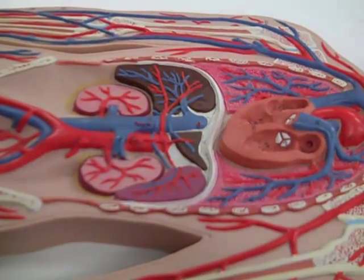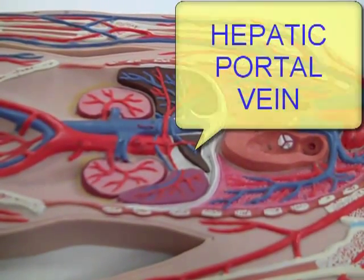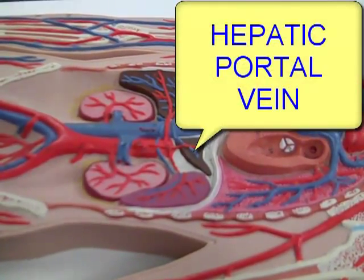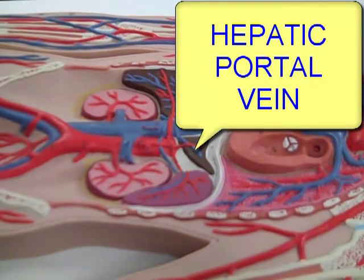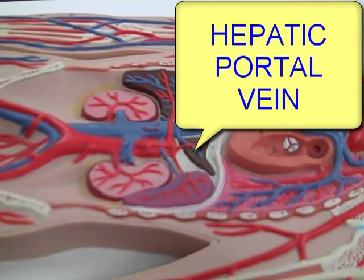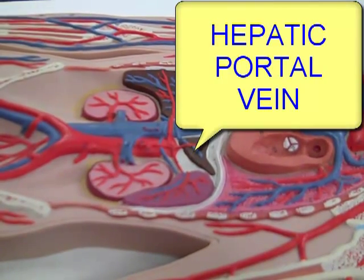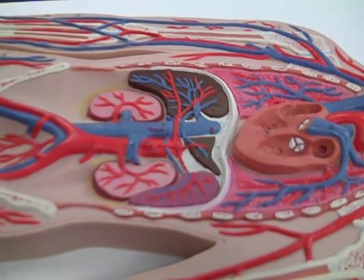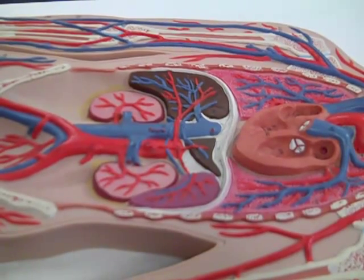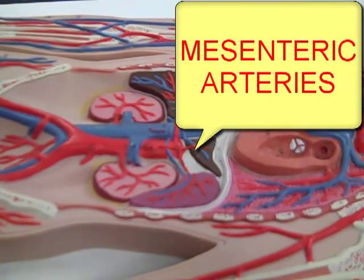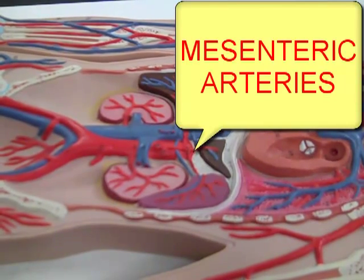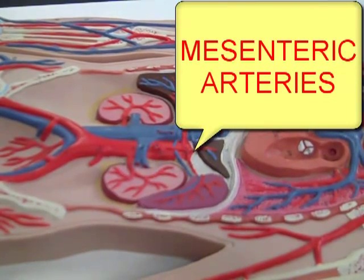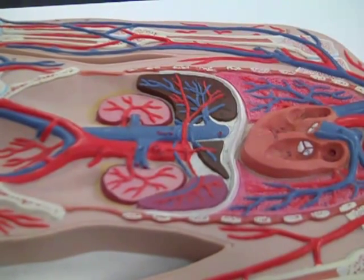We also need to identify the hepatic portal vein. It's not visible on this diagram; however, we need to recognize that the hepatic portal vein connects the intestines to the liver — that's a digestive function. We also need to be aware that the mesenteric arteries, once again not present on this diagram, feed the small intestines.